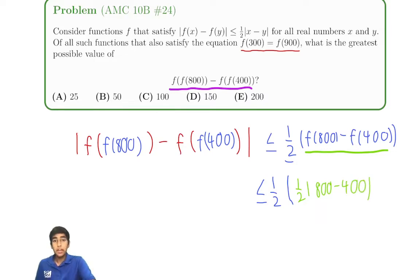So what should we make of this? Well, we can see that this part is just 400, so it's less than or equal to 100. So if the absolute value must be less than or equal to 100, then is our answer just 100?